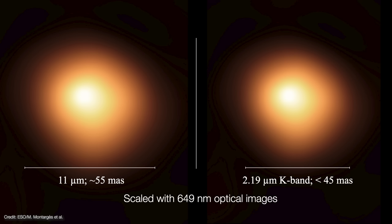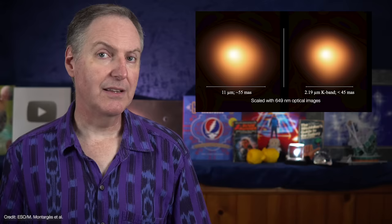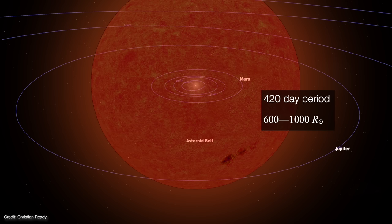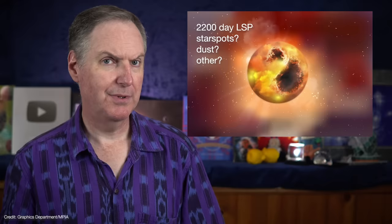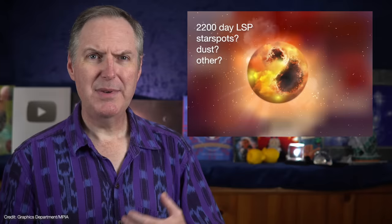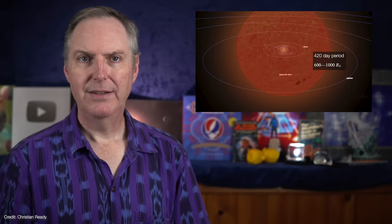K band measurements place Betelgeuse's diameter at less than 45 milli-arcseconds. That's at least 10 milli-arcseconds smaller than the measurements quoted by Sayo. That means that even at the largest distance estimate of 880 light-years, Betelgeuse would still be much less than 1300 solar radii. Too small to have the star pulsating every 2200 days. Therefore, the 2200-day cycle must be a secondary period. Maybe it's the cycle of dark spots forming in the photosphere, or the formulation of dust, or maybe something else that just isn't a true pulsation of the star.